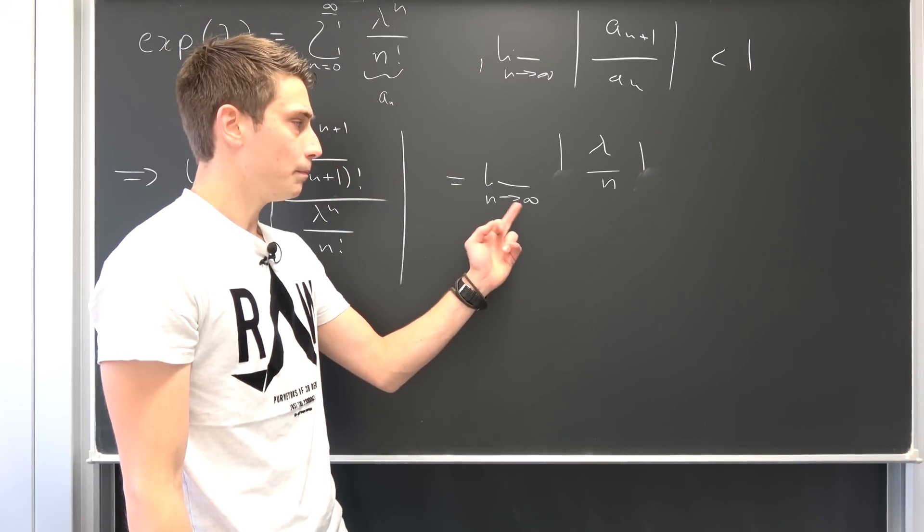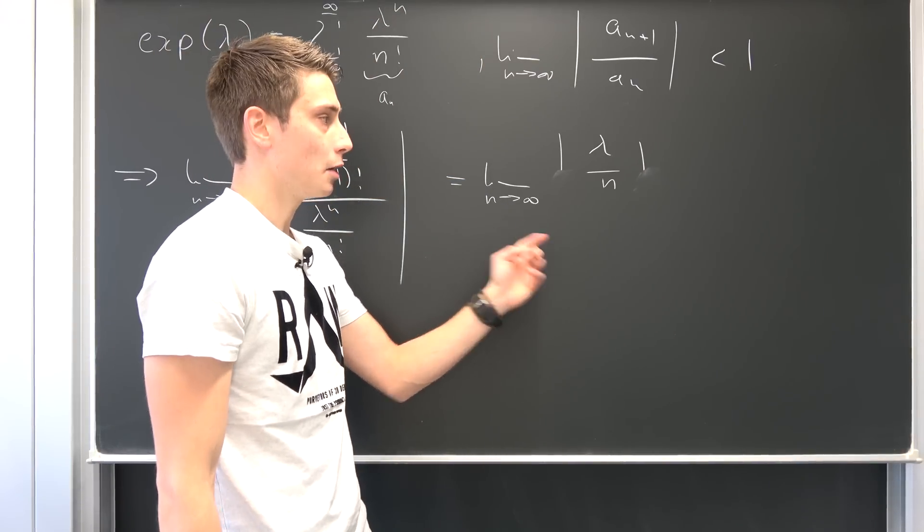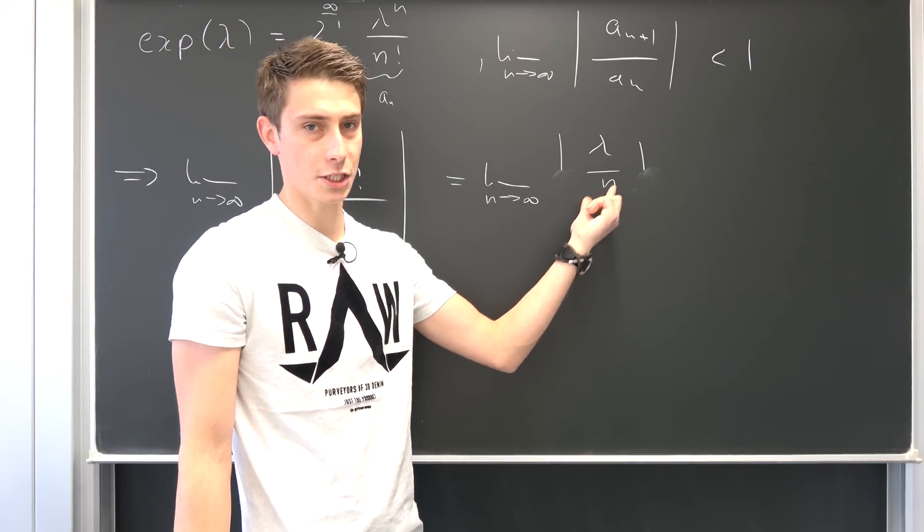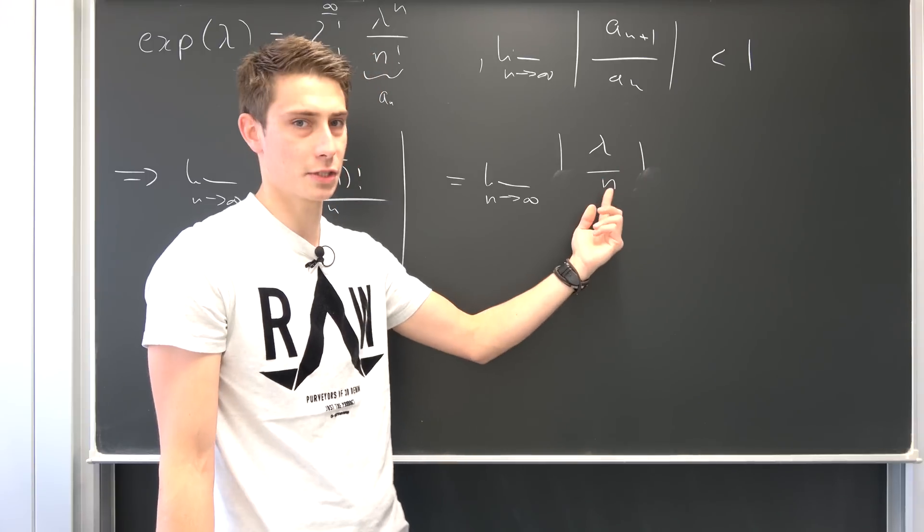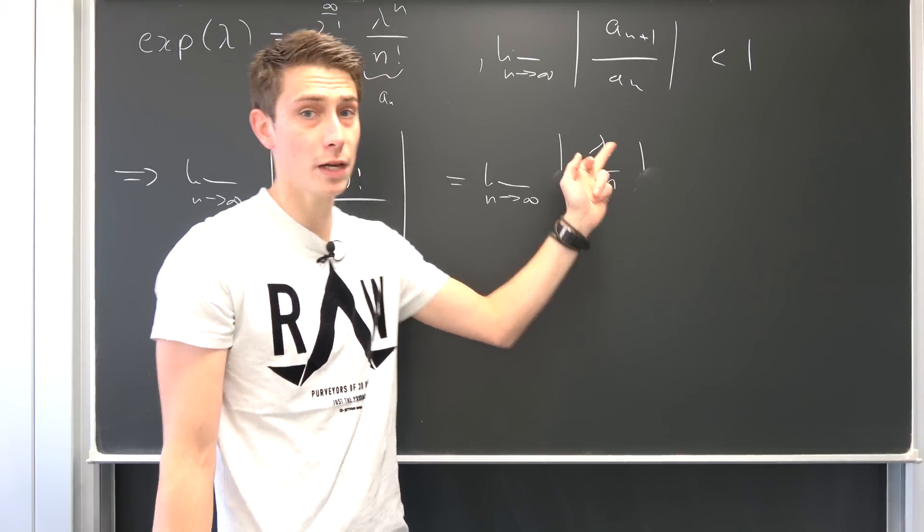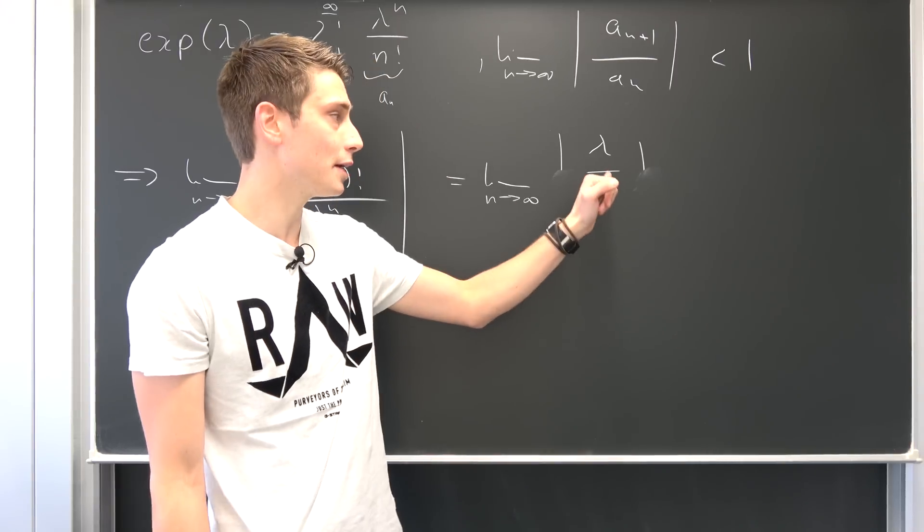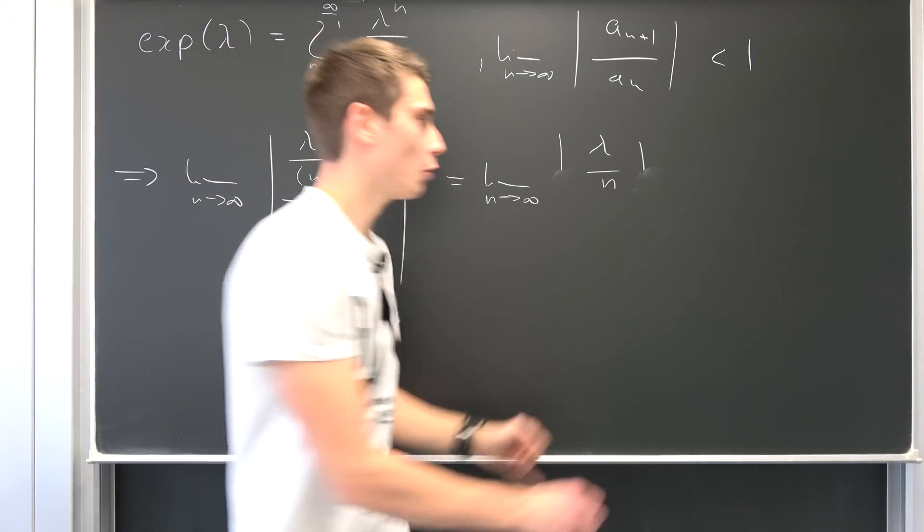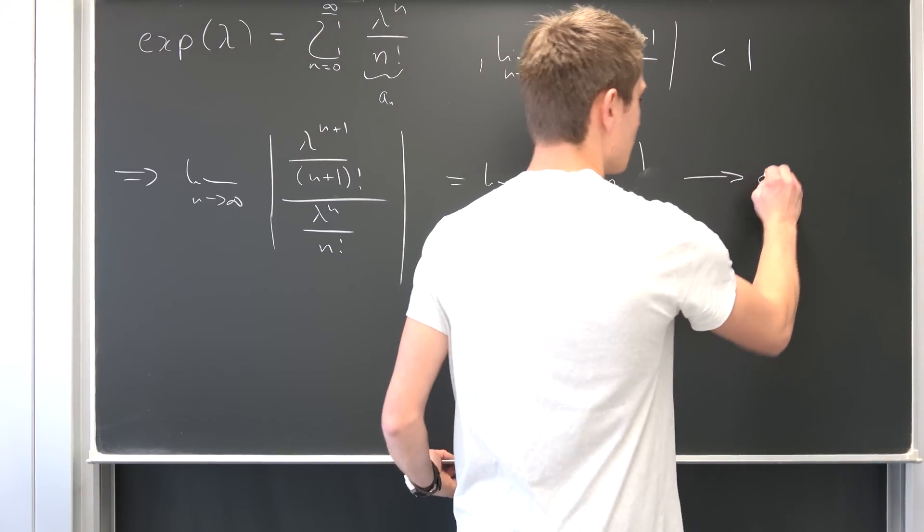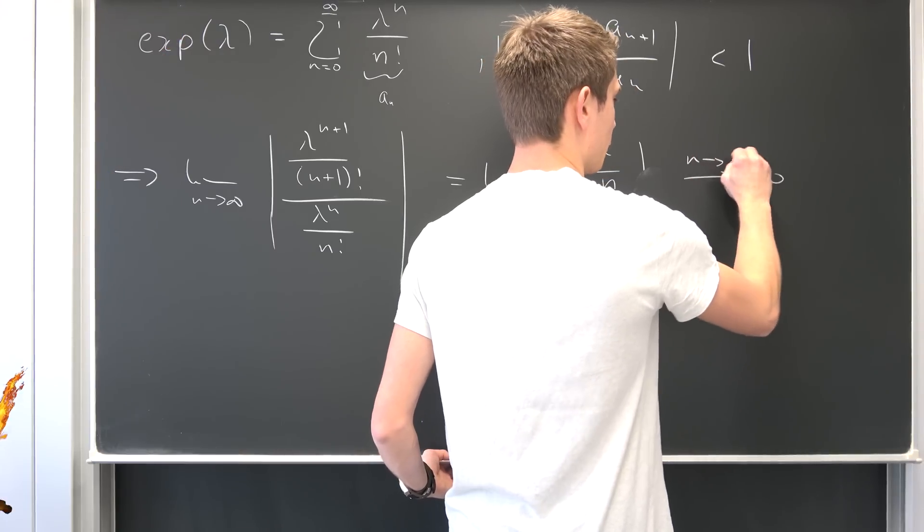And now, what is going to happen if n approaches infinity? Well, this fraction is going to get smaller and smaller. So overall, it doesn't matter which value for lambda you plug in, a complex value, a real value, it really doesn't quite matter. So here, this fraction is always going to go to zero in the limit when n approaches infinity.